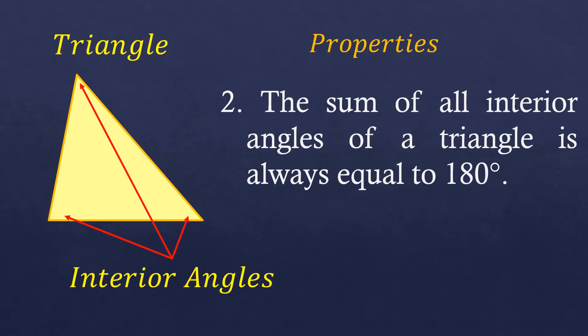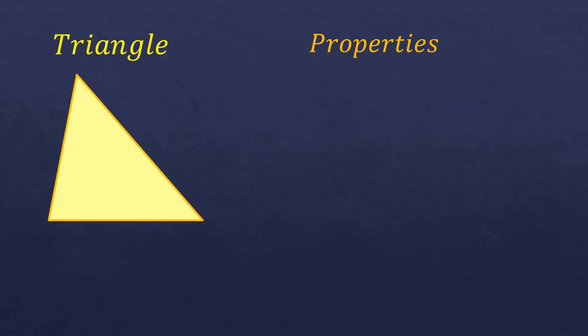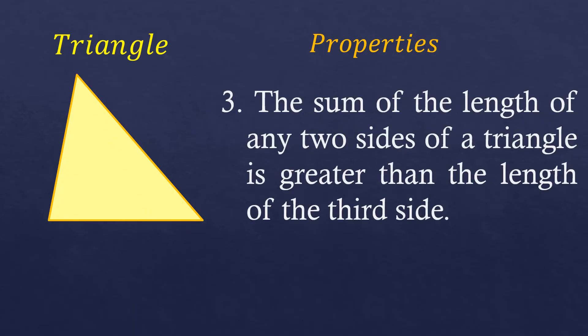the sum or the total is always 180 degrees. The third property is the sum of the length of any two sides of a triangle is greater than the length of the third side. So meaning, if you're going to add any two sides of a triangle, its total is always bigger than the third side which is not added.